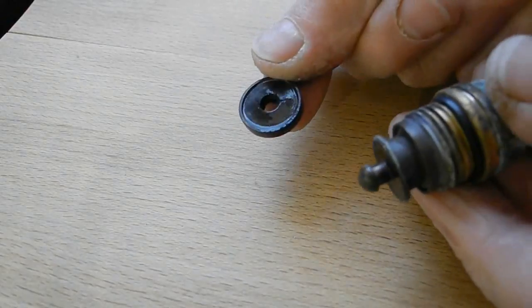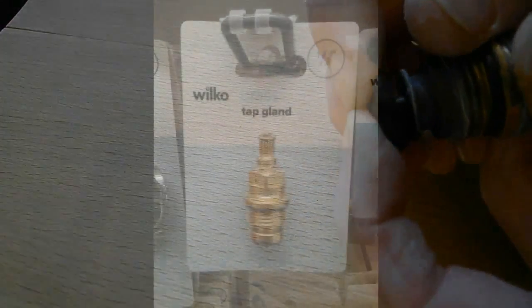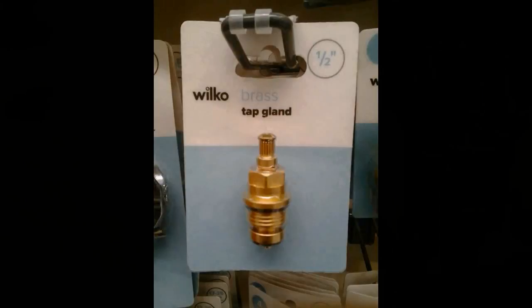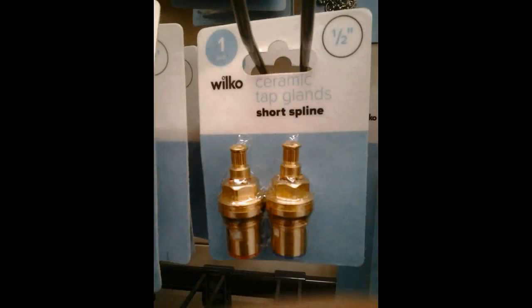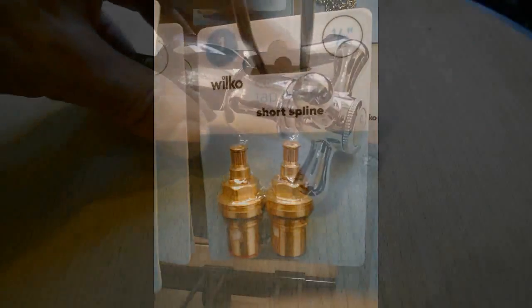Sometimes it could cause a problem with the tap like leaking. There are two types of cartridge: brass tap gland, like we have, and ceramic tap glands, which have no washers and are replaceable as a whole part.